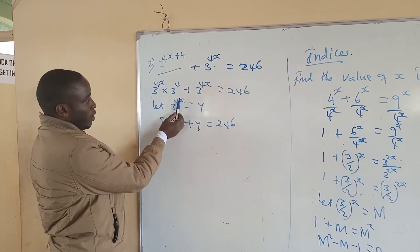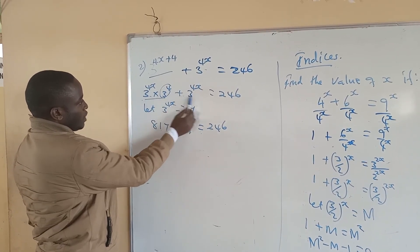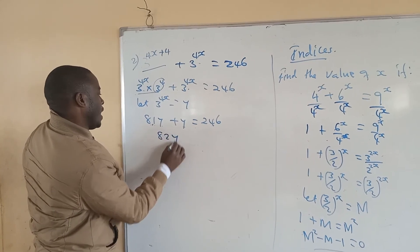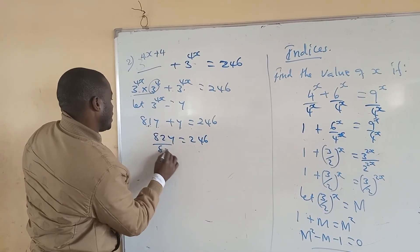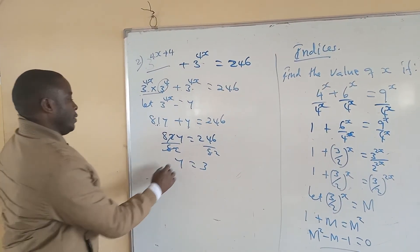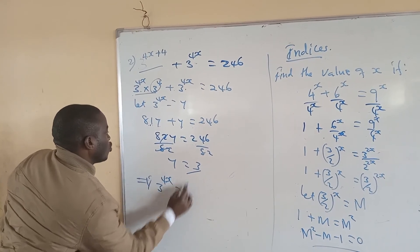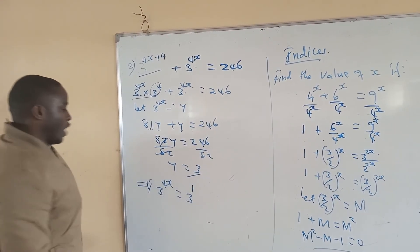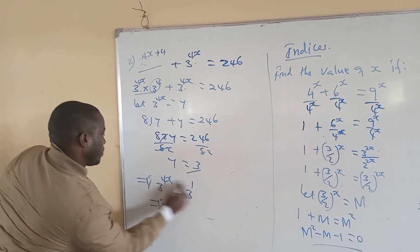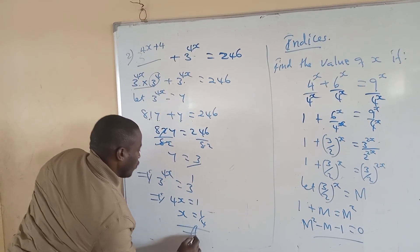Dividing both sides by 82, we get y equals approximately 3. Since y equals 3, and 3 can be written as 3 to the power 1, we have 3 to the power 4x equals 3 to the power 1. Since the bases are the same, the powers are equal, so 4x equals 1, and therefore x equals 1 over 4.